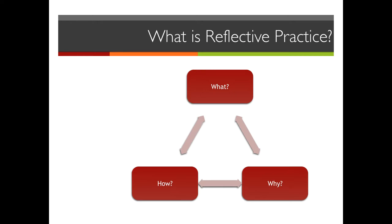Often reflective practice for a lot of people is about what went wrong, why it went wrong, and how we can avoid it in the future. All these different ways around this kind of triangle are often brought about by different incidents that happen, or different ways that we are utilising reflective practice.